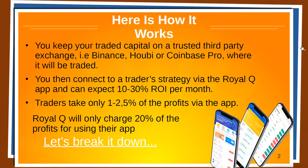Here's how it works: you keep your traded account on a trusted third-party exchange such as Binance, Bybit, or even Coinbase Pro, where it will be traded. You connect to a trader strategy with the Royal Q app — you don't need any previous experience whatsoever. You don't need to know anything about trading or crypto. You basically plug and play, connect with a trader, and his strategies will be copied inside your own account.